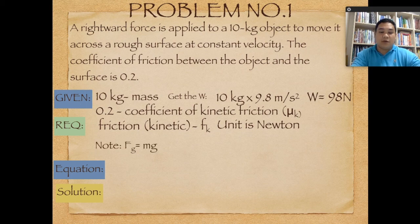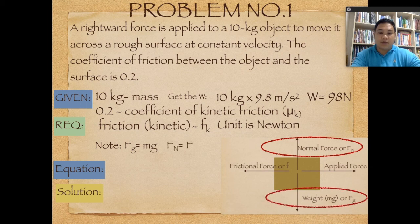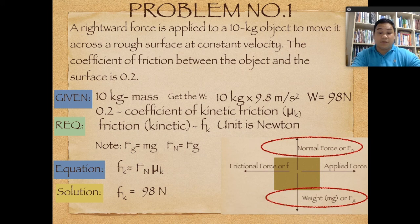Note that the force of gravity equals mg, and since the object is not moving vertically, the normal force equals weight, so Fn equals 98 newtons. Using the formula Fk equals Fn times mu sub k, we substitute: kinetic friction equals 98 newtons times 0.2. Therefore, the kinetic friction force equals 19.6 newtons.